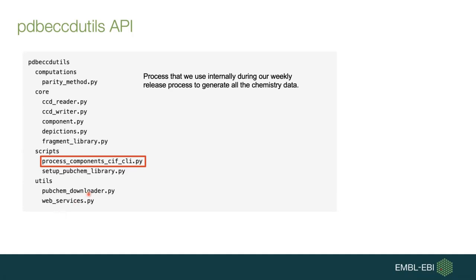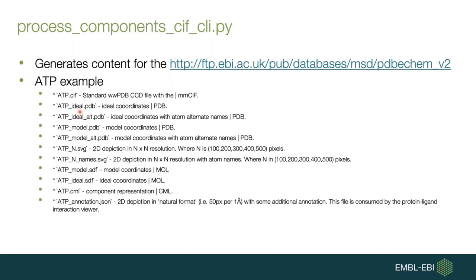We use this package extensively in our chemistry release process, and there are a number of scripts defined by the package that we run weekly to generate our chemistry data. All the data we generate are available from an FTP area, and roughly for each chemical component you can find the standard CCD file in CIF format, a number of different conformers in different file formats, molecular depictions at different resolutions, as well as a metadata file about the component of interest.